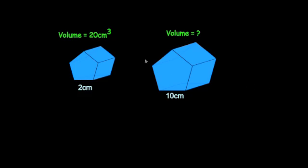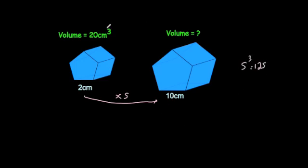We've got two pentagonal prisms and we know that the volume of the smaller one is 20 centimeters cubed. The length of this side is 2 and the length of this side is 10, which means the scale factor of enlargement is 5 — it's 5 times bigger. Because the sides are 5 times bigger, we do 5 cubed to get 125. The volumes will be 125 times bigger, so we do 20 times 125 and we get the volume of the large one will be 2,500 centimeters cubed.